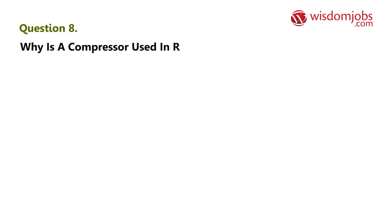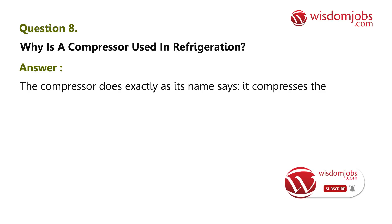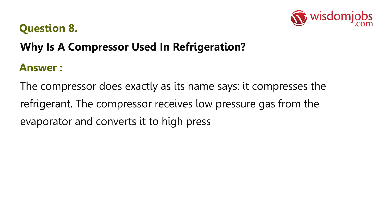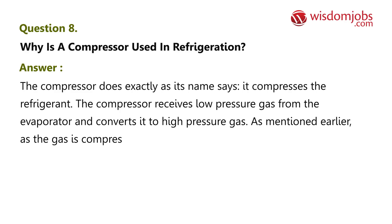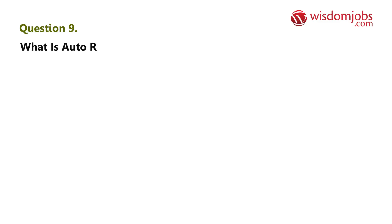Question 8: Why is a compressor used in refrigeration? Answer: The compressor does exactly as its name says — it compresses the refrigerant. The compressor receives low pressure gas from the evaporator and converts it to high pressure gas. As the gas is compressed, the temperature rises. The hot refrigerant gas then flows to the condenser.